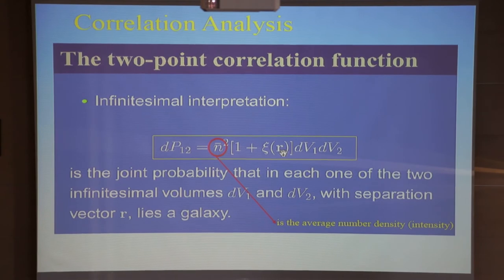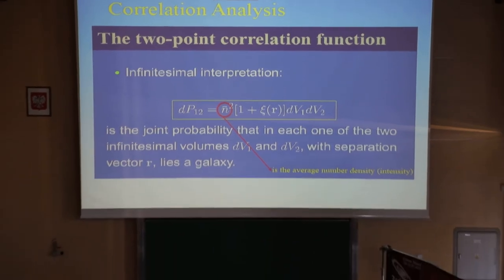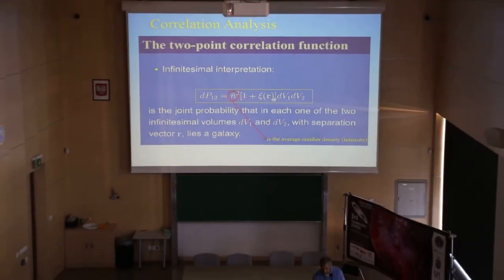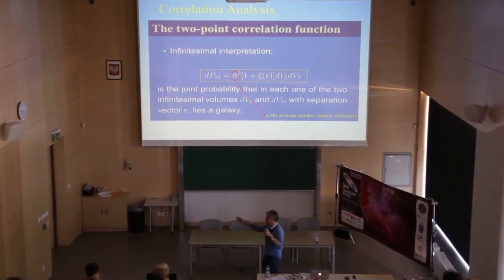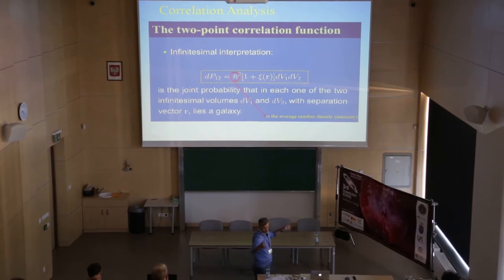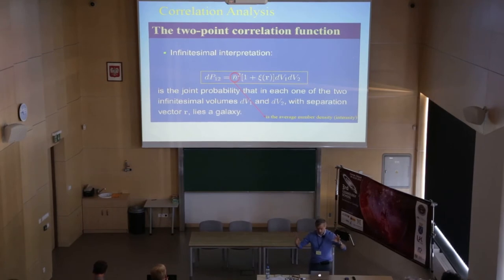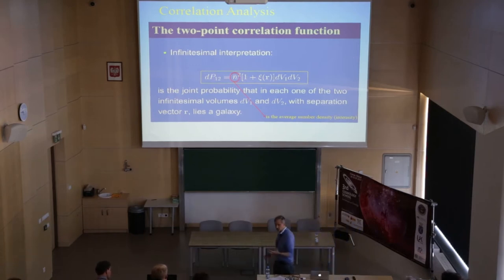The probability is proportional to the density squared and the volumes. If the process is completely random, this quantity - the correlation function - will be zero, because the probability of having two objects separated by a given distance will be directly proportional to the average density squared and the volume of each small patch. But if you have clustering, this quantity will be larger than zero. What we're measuring is exactly the excess over a Poisson distribution of the chance of finding a galaxy at a given distance from another one.